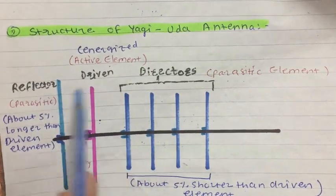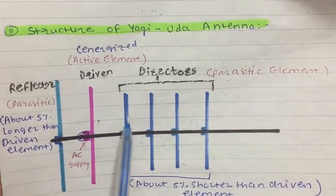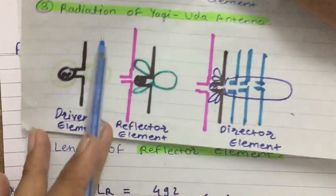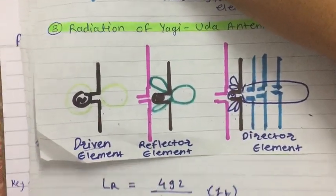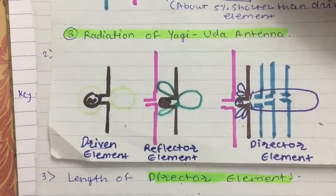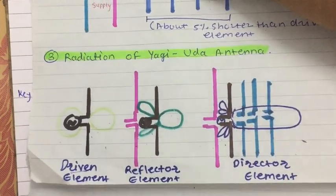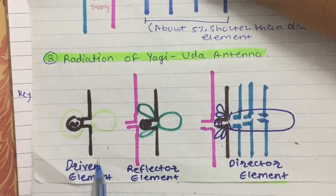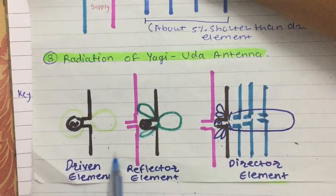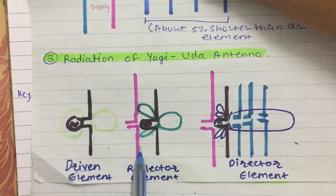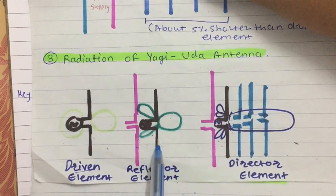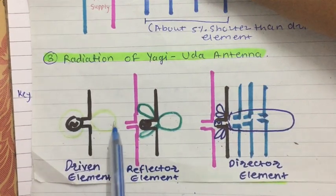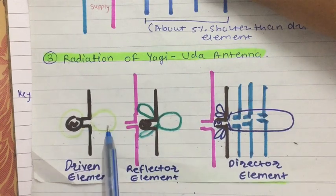Now we see the radiation of Yagi-Uda antenna — how it radiates in space. If we have only a simple dipole antenna, the radiation characteristics look like this basic pattern for only the driven element. When you connect a reflector element, drawn in pink color, the signal going in the left side direction is reflected to the front, which is the right side direction. So the radiation pattern changes accordingly.